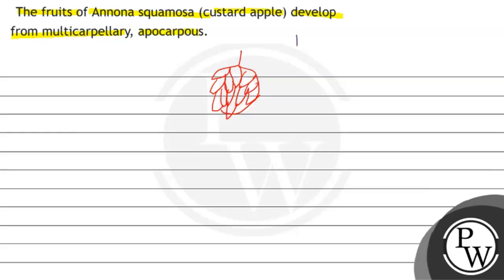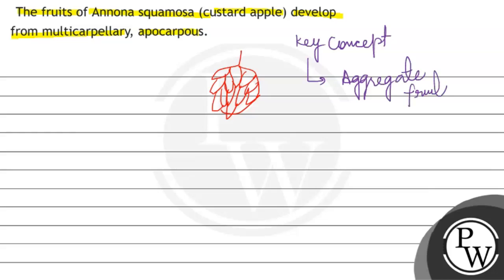This is a true or false statement. The key concept here is that the aggregate fruits of Annona squamosa are formed from a multi-carpellary ovary — it is a multi-carpellary condition.